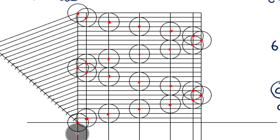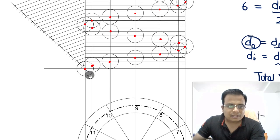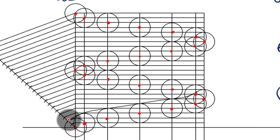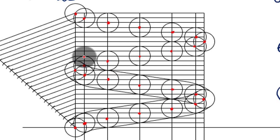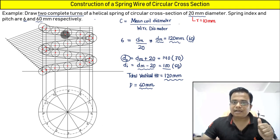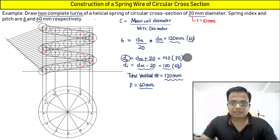Starting from the bottom point, draw a curve that touches and goes — maintaining tangency with the outer periphery of each circle — touching and going through each circle until you reach the end. Then from that point, again touch and go through each circle. Maintain tangency throughout. This gives you the complete spring wire of two revolutions with wire diameter 20 mm.